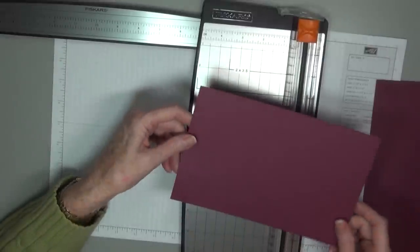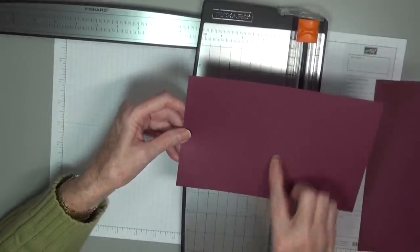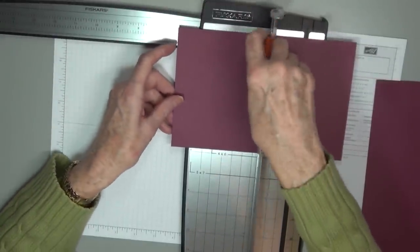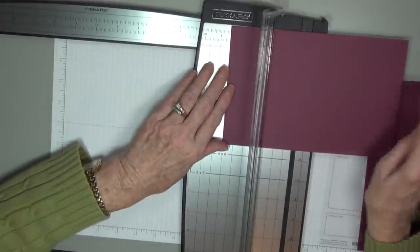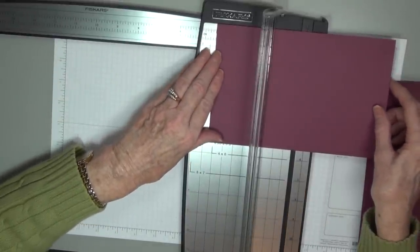I'm going to show you next how to score this, and you think, 'Why do I need to score it?' Because you want to break down those fibers in this paper so that it's very simple for you to fold it without there being any buckling. So this is 8.5, so we're going to go half of that, which will be 4.25.